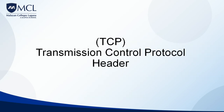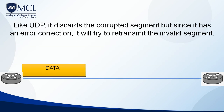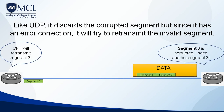Let's proceed to the Transmission Control Protocol header. Besides error detection, TCP also has error correction — it doesn't just detect errors, it corrects them. Like UDP, it discards the corrupted segment. But since it has error correction capability, it can retransmit the corrupted segment. For example, if segment 3 is corrupted, the receiving router sends an acknowledgement to the sender router requesting segment 3 be resent, and the sender retransmits it. TCP is more reliable to use, especially when your application requires high reliability or fidelity.